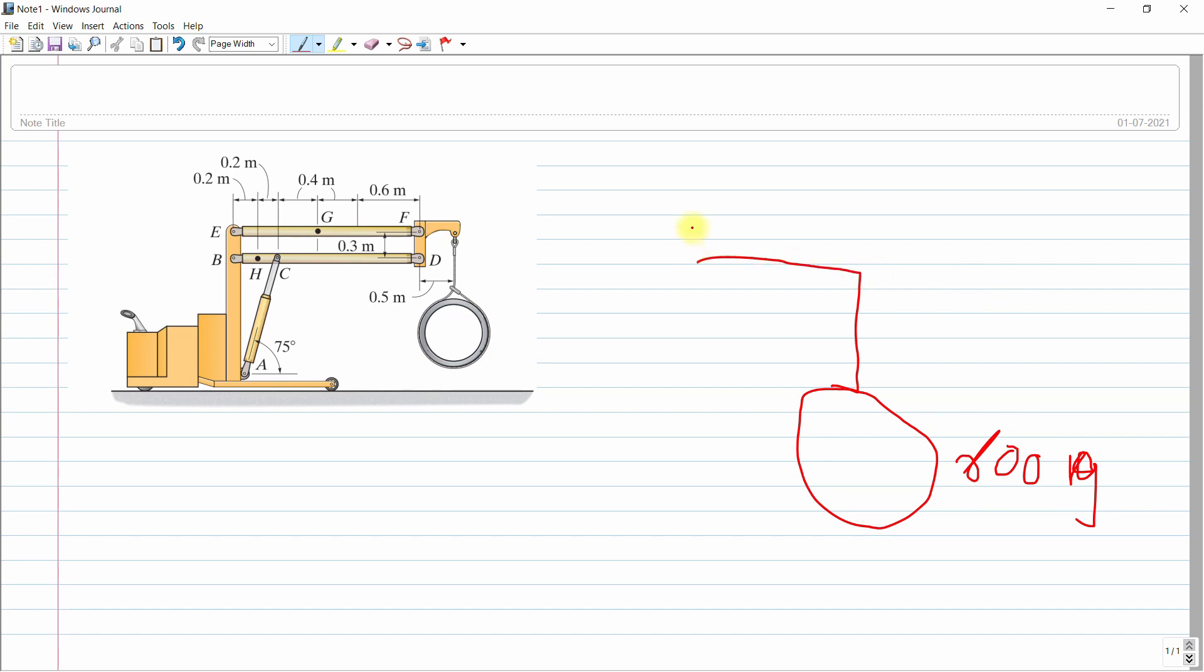And this is our D length, so this is around 0.5 meter, and this is F point and this is D point.